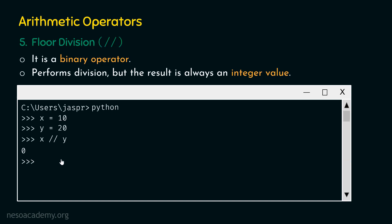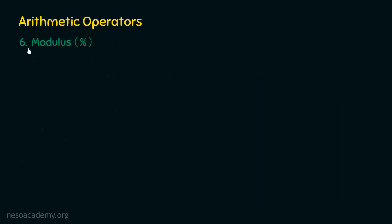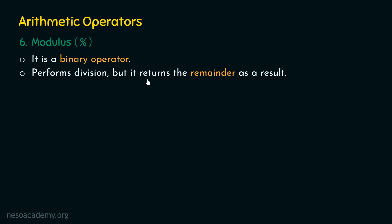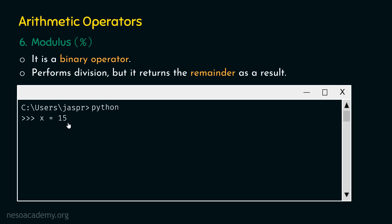After understanding floor division, let's move on to the next operator: modulus, denoted by the percentage sign. It is also a binary operator that performs division but returns the remainder as a result. For example, with x equal to fifteen and y equal to seven, x mod y gives us one, because fifteen is not completely divisible by seven and the remainder is one.